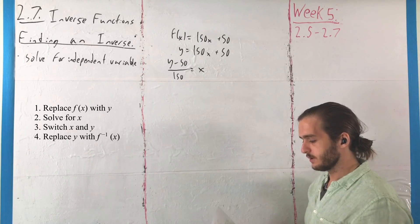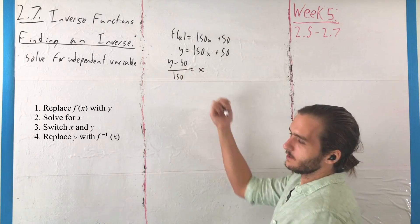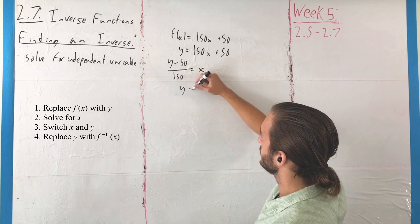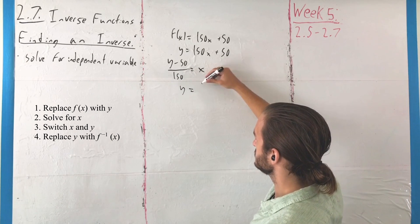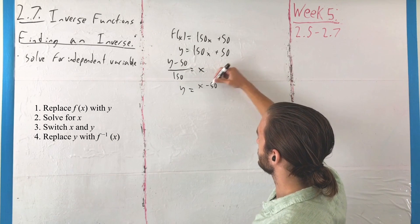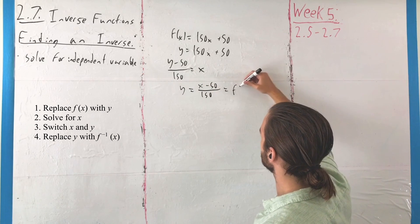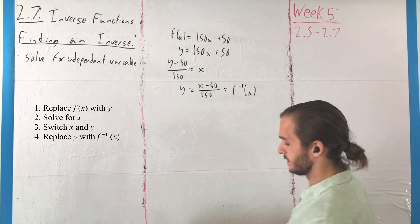But the book says we should go further, swap these two. I'm also going to swap the order of the equality, and we will get y equals x minus 50 over 150, and we'll call that f inverse of x and be done with it.